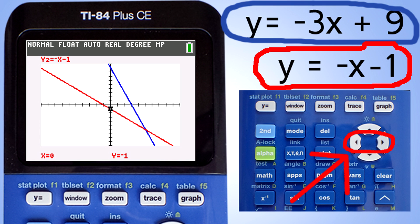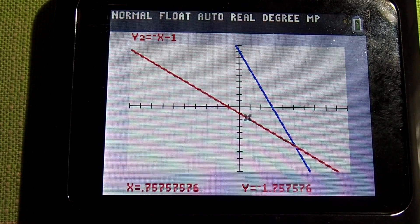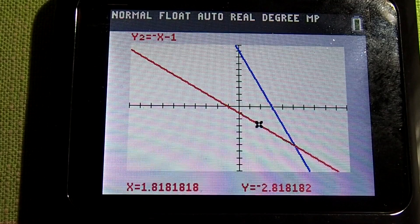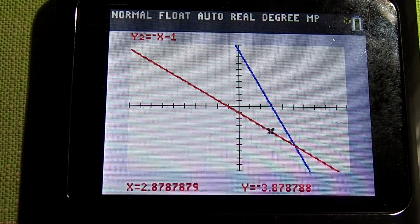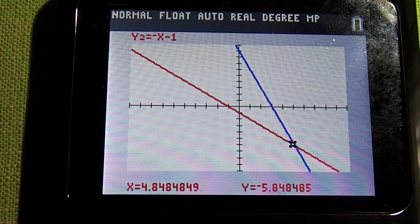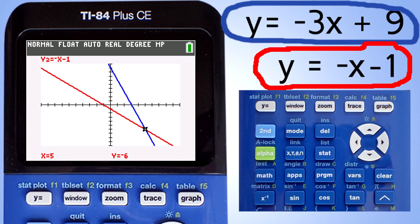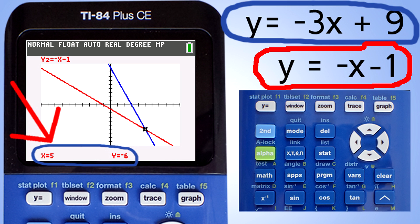We are going to use the left and right arrows to move the trace mark to the intersection of the lines. Press the right arrow key until the trace mark is at the intersection. Look at the bottom of the window and you can see the x and y coordinates changing as the trace mark moves along the line. The intersection is right here, and here is the x and y coordinate of the intersection and the answer to this system of linear equations: x equals 5 and y equals negative 6.